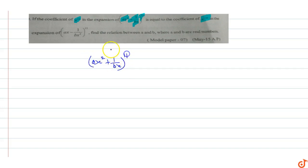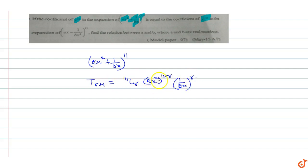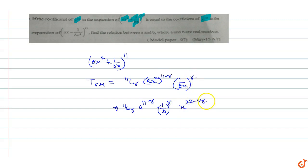For the expansion of (ax² + 1/bx)^11, x^10 का coefficient क्या होगा। T(r+1) term होगी: 11Cr · (ax²)^(11-r) · (1/bx)^r. इसमें x का coefficient आएगा: 11Cr · a^(11-r) · (1/b)^r और x की power होगी 22 - 2r - r। तो x^10 के लिए 22 - 2r - r = 10।